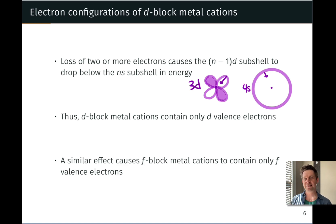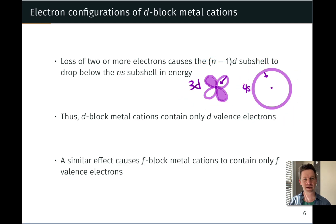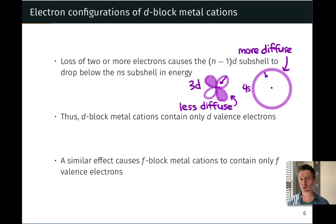If you look at the sizes of the 3D and 4S orbitals, what we find is that the 3D orbital is smaller than the 4S orbital — on average, electrons are farther away from the nucleus in the 4S orbital than the 3D orbital. The 3D orbital is less diffuse than the 4S orbital. So when we remove an electron and introduce positive charge into the now ion, all of the electrons get pulled in, and the 3D electrons get pulled in to a greater degree than the 4S electrons.